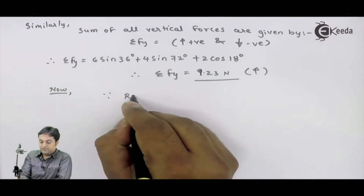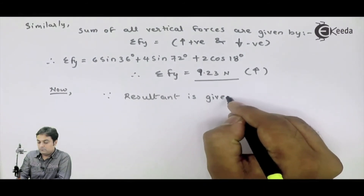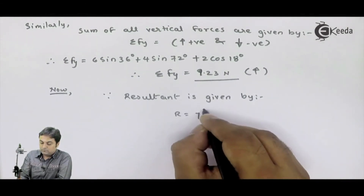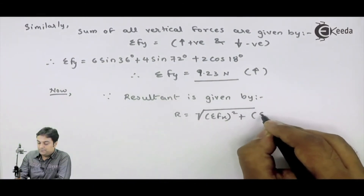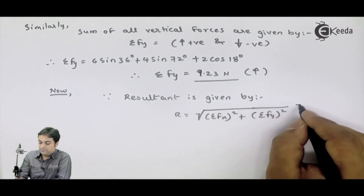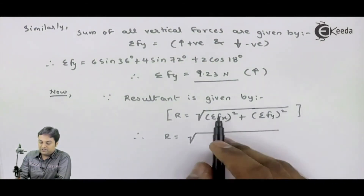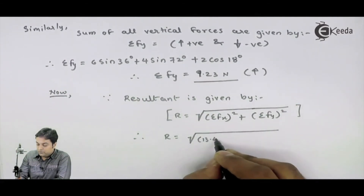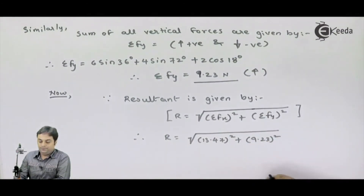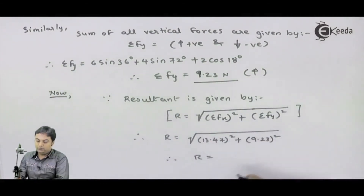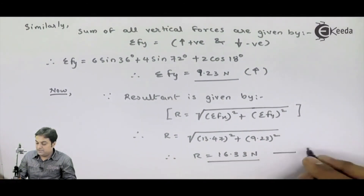The resultant is given by R = √(ΣFx² + ΣFy²). Therefore R = √(13.47² + 9.23²). Calculating this square root gives a resultant of 16.33 Newton — that is the first answer.